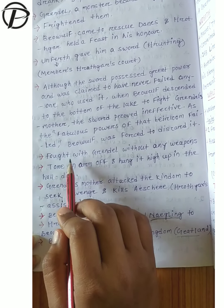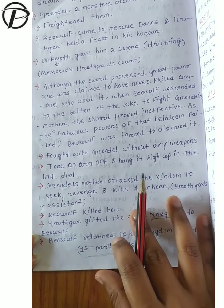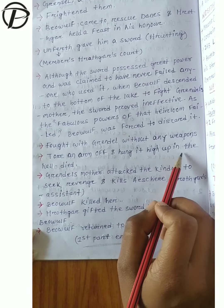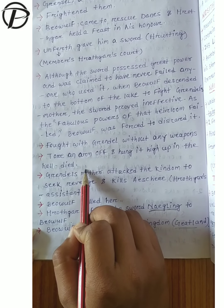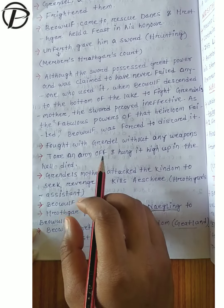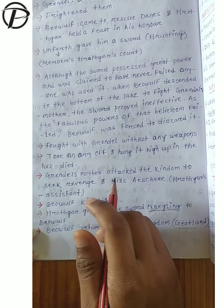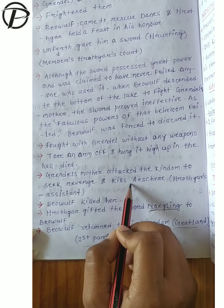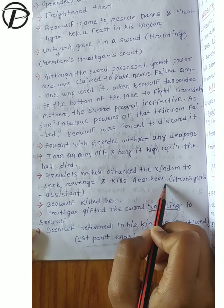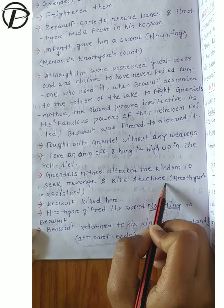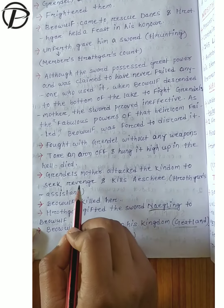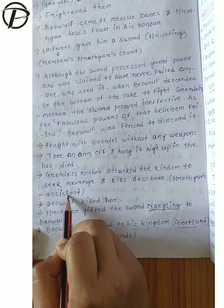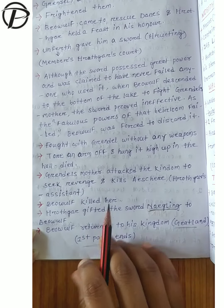Then Beowulf fought with Grendel without any weapons. He tore off Grendel's arm and hung it in the hall as a sign of victory, dividing Grendel into two parts. Then Grendel's mother attacked the king to seek revenge and killed Aeschere, who was Hrothgar's assistant.